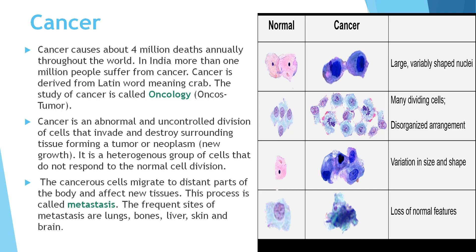Metastasis happens in the lungs, bones, liver, skin and brain tissues. The difference between normal and cancer cells: cancer cells are larger with variably shaped nuclei, whereas normal cells have uniformly shaped nuclei and are smaller in size. Cancer cells are always dividing and are not arranged in an organized manner, while normal cells divide and remain organized. The size and shape of cancer cells vary, whereas normal cells in a tissue are similar in size.